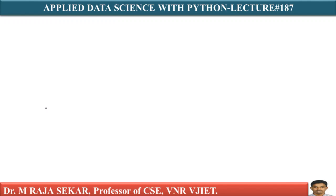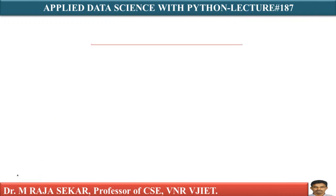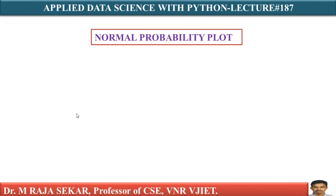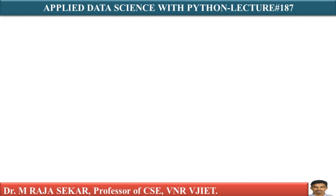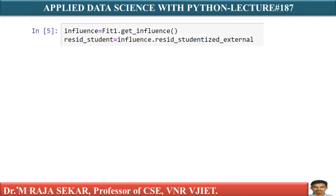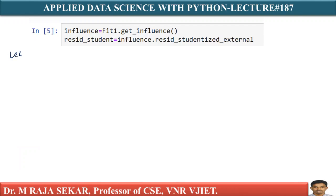My dear friends, welcome to Rajashekar Classes on Applied Data Science with Python. This is lecture number 187. In this lecture, we will try to understand Normal Probability Plot. Before understanding Normal Probability Plot, I request you to go through lecture number 186, that is my previous lecture.